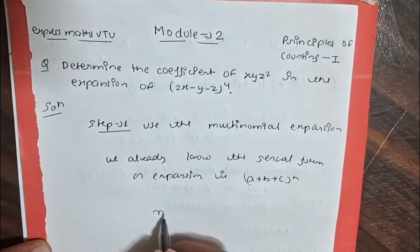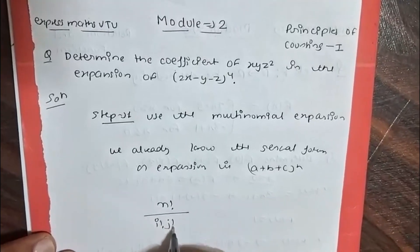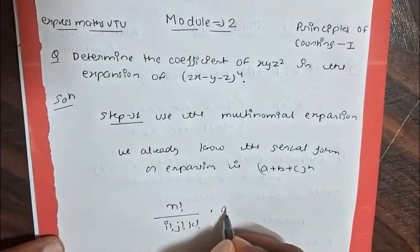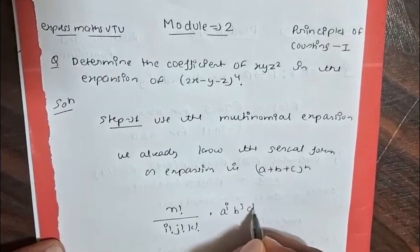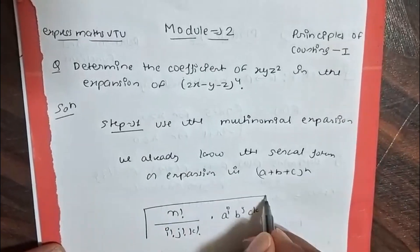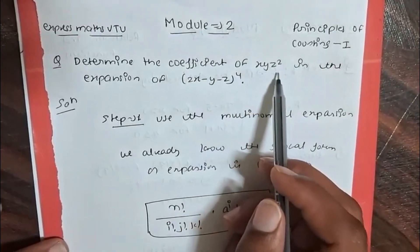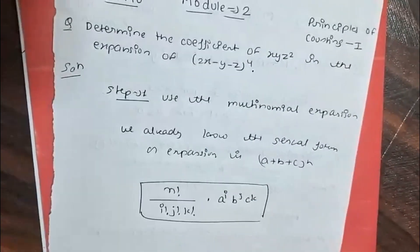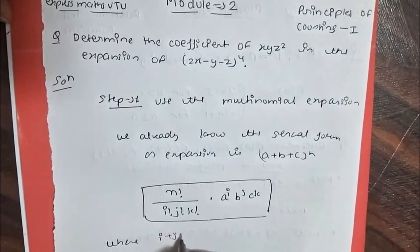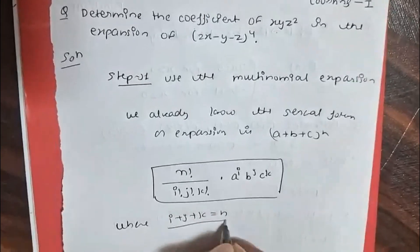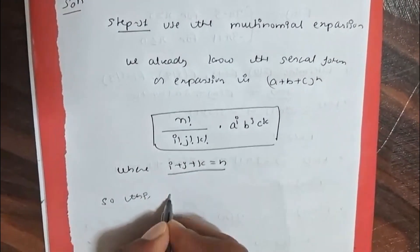The general term of the multinomial expansion is: n! divided by (i! · j! · k!) multiplied by a to the power i, b to the power j, and c to the power k, where i + j + k = n.